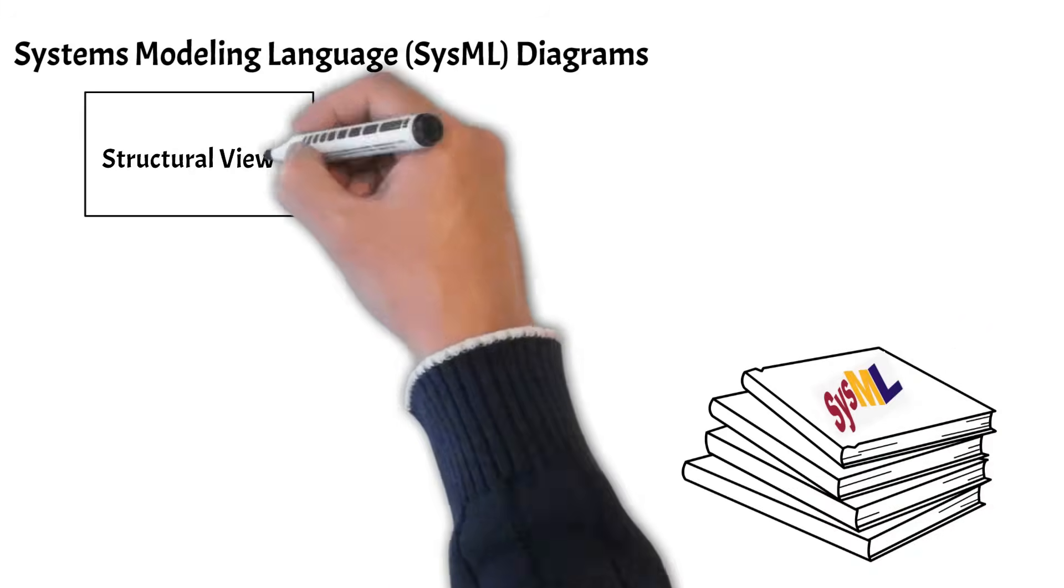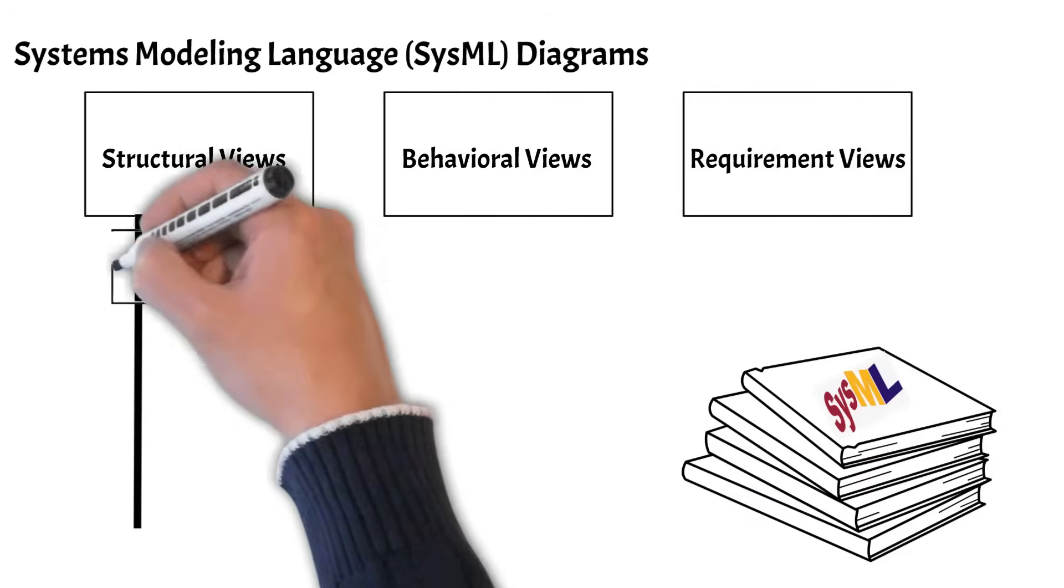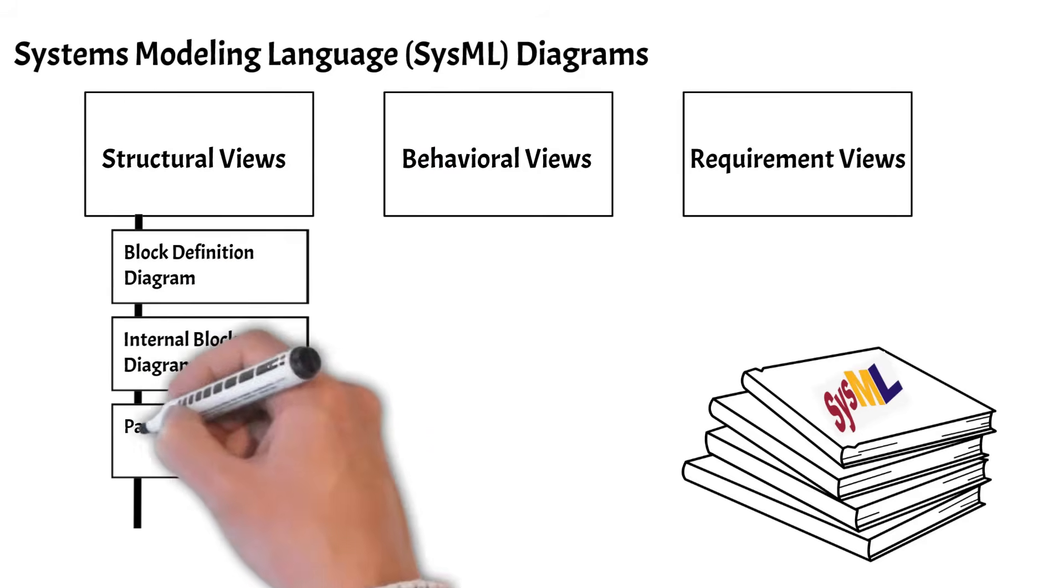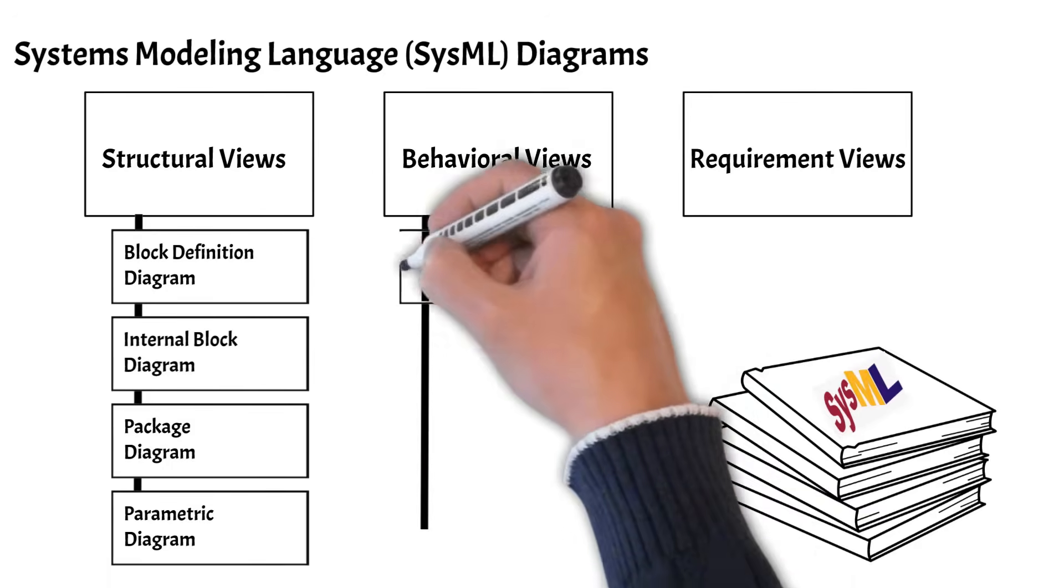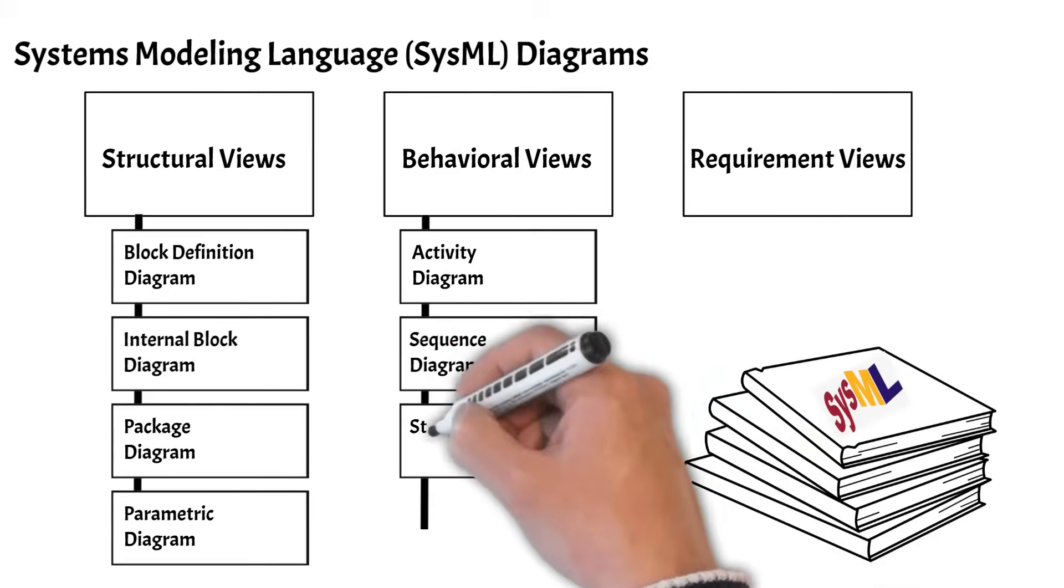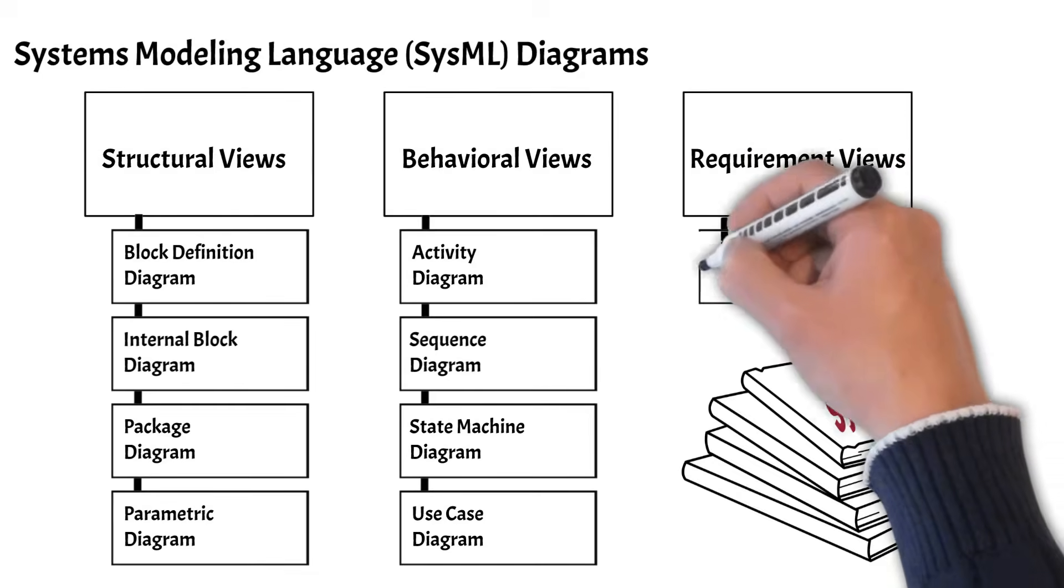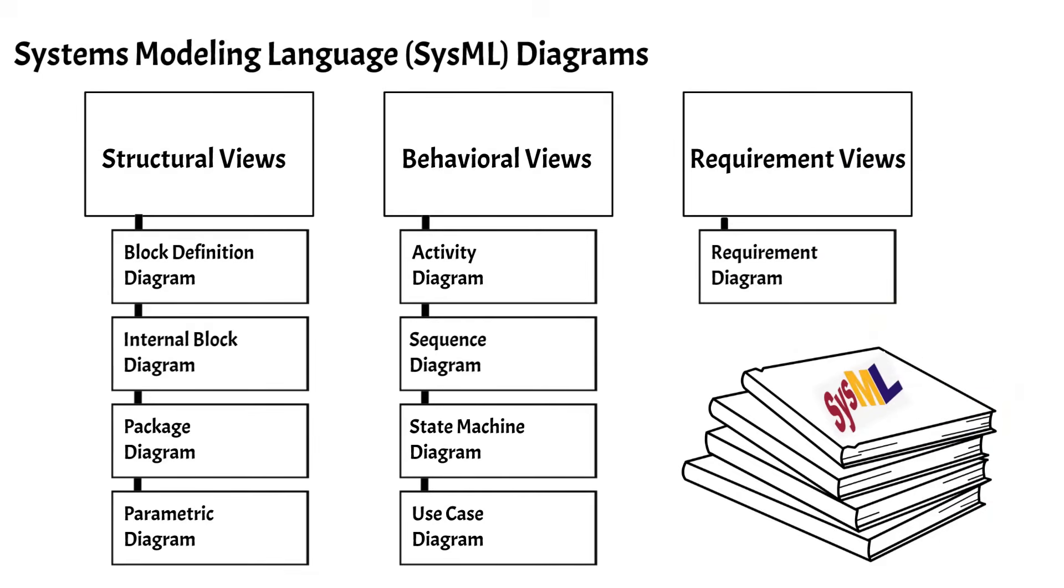SysML has structural, behavioral, and requirement diagram types. There are a total of 9 different types of SysML diagrams. Each diagram has a special and unique use. To learn more about the SysML diagrams, please check out our mini walkthrough videos on our channel.